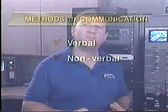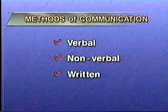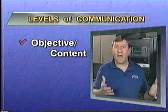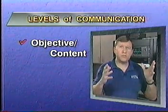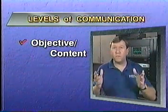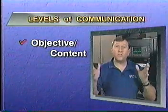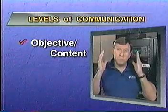The third method is written communication. This is a very important means of communication for the security officer. Since everything written becomes a permanent record, always be accurate and complete. There are also two levels of communication. The first is objective — this can be the facts, the message itself, what actually occurred, or instructions. Objective communication could be asking a visitor to complete the visitor's log correctly, or describing an event in a report exactly as you observed it, very objectively.